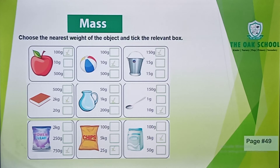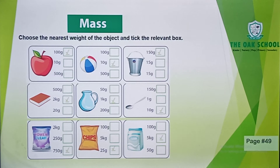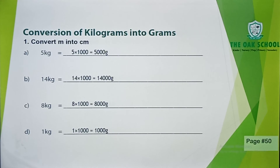After that, you have a chips packet. You have 3 weights: 100 grams, 5 kg, or 25 grams. You have to tick it in the box. After that, you have the last object. The weights are 100 grams, 5 kg, and 50 grams. You have to tick it in the box.